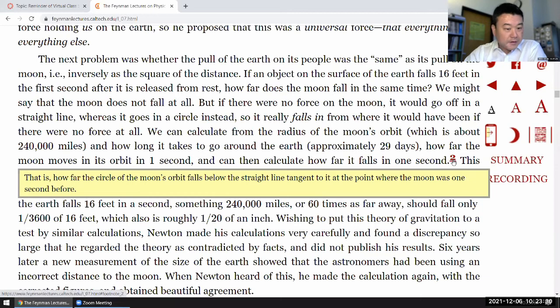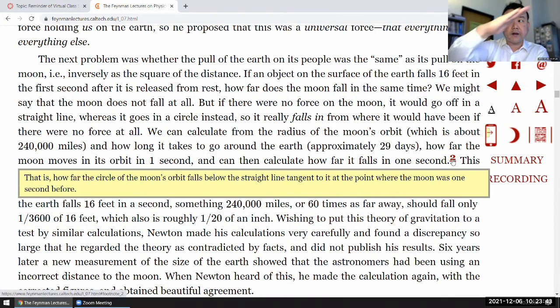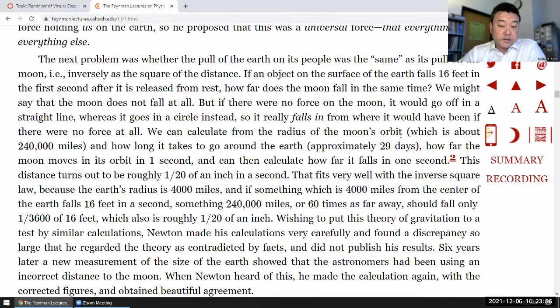I don't know what this is. Oh, yeah. So, this is the footnote describing what falling means. How far, let me just leave that there, how far the circle of, so if you imagine a straight line path and compare that with a circle, there's a distance there, that's the distance that's being described as falling. This distance turns out to be roughly 1/20th of an inch in a second. That fits very well with the inverse square law, because the Earth's radius is 4,000 miles, and if something which is 4,000 miles from the center of the Earth falls 16 feet in a second, something 240,000 miles, or 60 times as far away, should fall only 1/3600th of 16 feet, which also is roughly 1/20th of an inch.